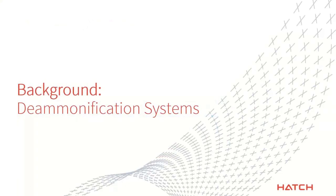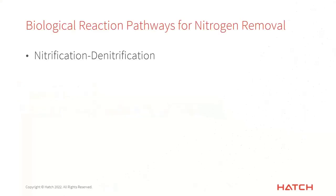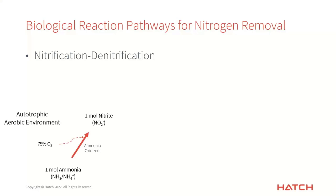Turning to nitrogen, I'm going to talk about the Anammox process — a deammonification process — where the idea is to get rid of the high concentration of ammonia coming out of the digester so we don't have to send it back to the activated sludge process. Normally, nitrification is a two-step process: ammonia oxidizers convert ammonia to nitrite, then a different biomass oxidizes nitrite to nitrate. Both steps consume oxygen, and if you also need to remove nitrate, you go through denitrification using heterotrophic biomass in an anoxic environment with carbon.